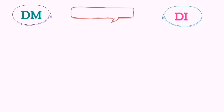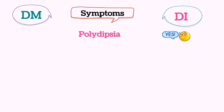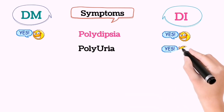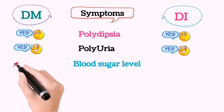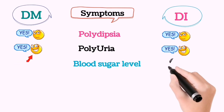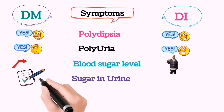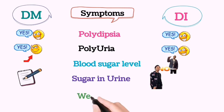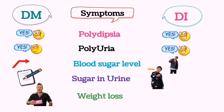Now let's talk about some typical symptoms of diabetes mellitus and diabetes insipidus. The first symptom is polydipsia, which is also called extreme thirst, which is common in both. The second symptom is polyuria, meaning too much urination, which is also common in both. Third, regarding blood sugar level — it increases in diabetes mellitus but in diabetes insipidus it goes down. The fourth symptom is sugar in urine, which is present in diabetes mellitus but not in diabetes insipidus. Last but not least is weight loss — in both conditions patients lose weight.